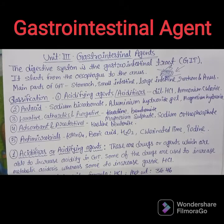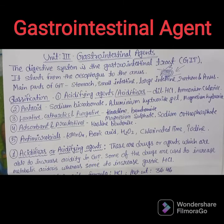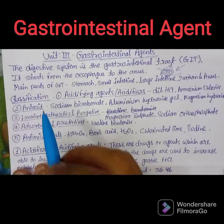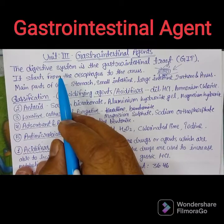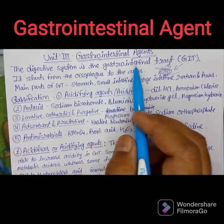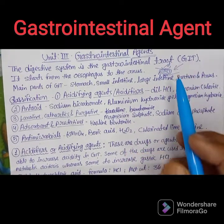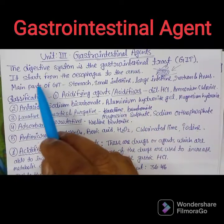Hello students. We are going to discuss about the gastrointestinal agents, which is in Unit 3 of Pharmaceutical Inorganic Chemistry, Semester 1, B. Pharmacy. GIT is the short form of gastrointestinal tract, which is nothing but the digestive system.